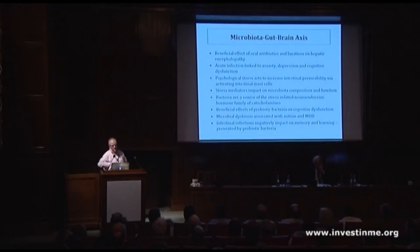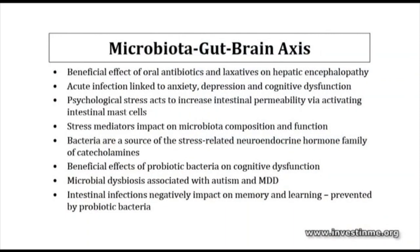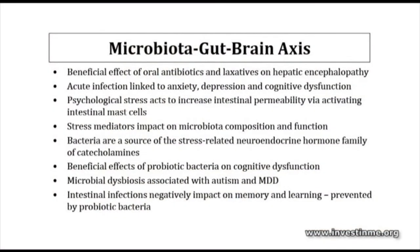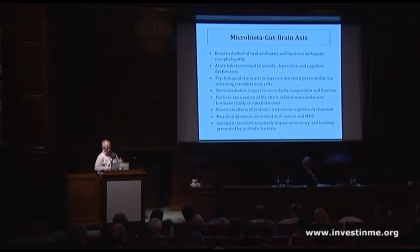Moving to the microbiota gut-brain axis: one of the most important findings is that bacteria are a source of many stress-related neuroendocrine hormones, in particular catecholamines, which can have direct effects on the brain. This is a bidirectional communication — stress-mediated factors from the central nervous system can impact on the microbiota's composition and function. Probiotic therapy has beneficial effects on cognitive dysfunction. Microbial dysbiosis has recently been associated with autism and depression, and intestinal infections can negatively impact memory and learning.